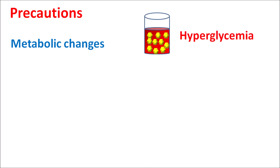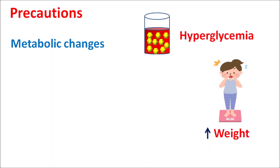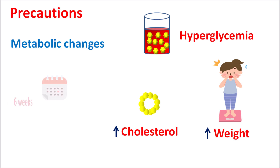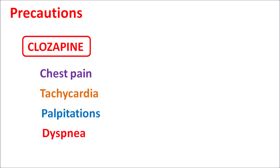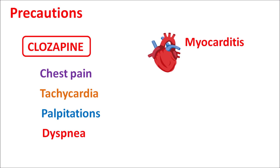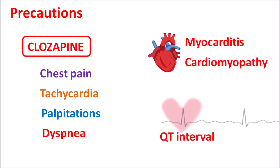This drug can produce metabolic changes resulting in hyperglycemia — increased glucose levels — and can also increase weight gain and cholesterol levels. These metabolic changes are particularly observed after six weeks of treatment with clozapine. Patients may develop chest pain, tachycardia, palpitations, or dyspnea. If any of these symptoms are observed, there may be a chance of developing cardiac disorders such as myocarditis or cardiomyopathy, and in such conditions this drug should not be used.